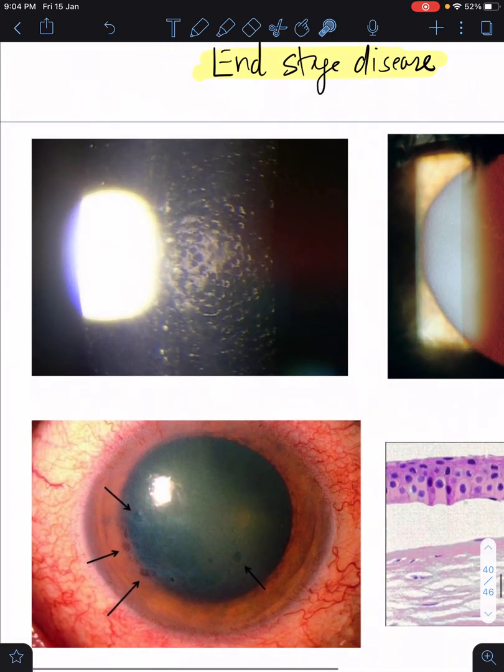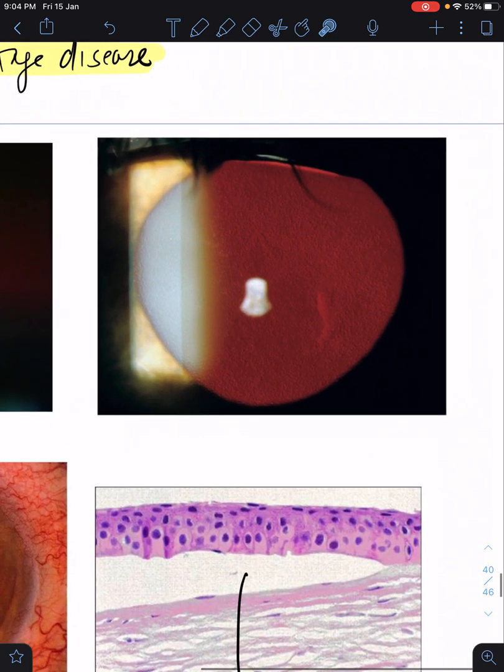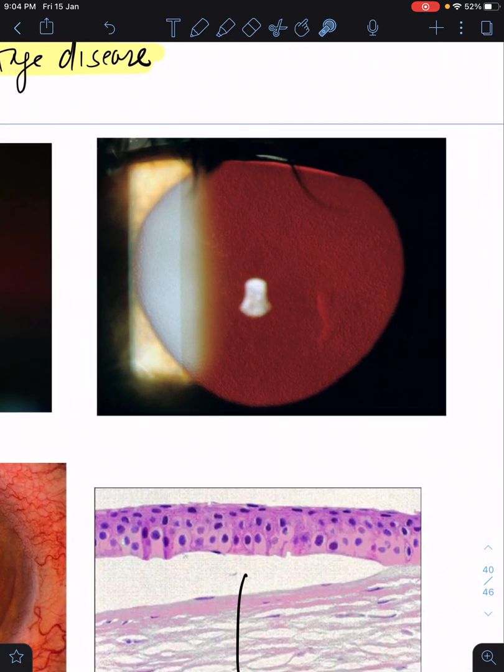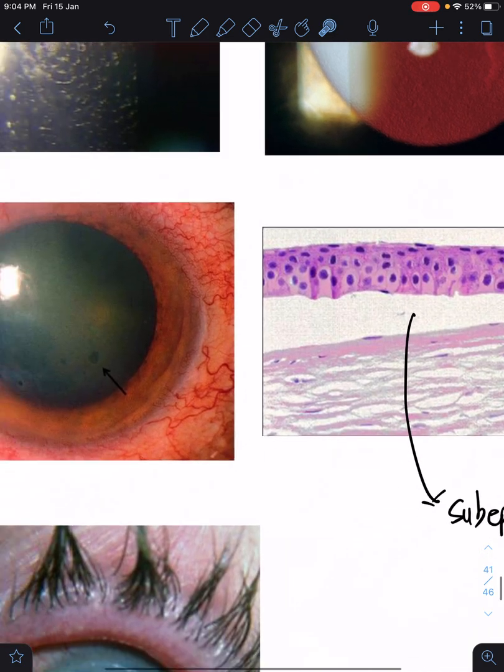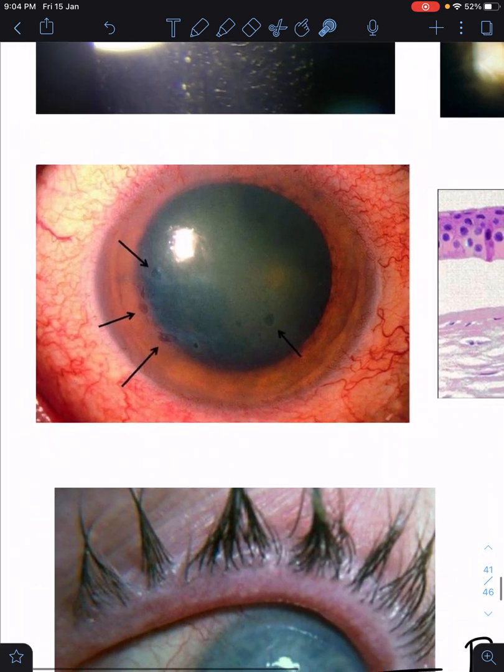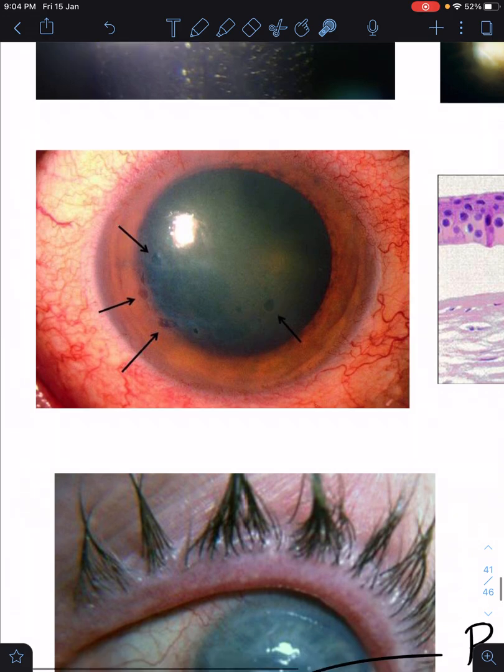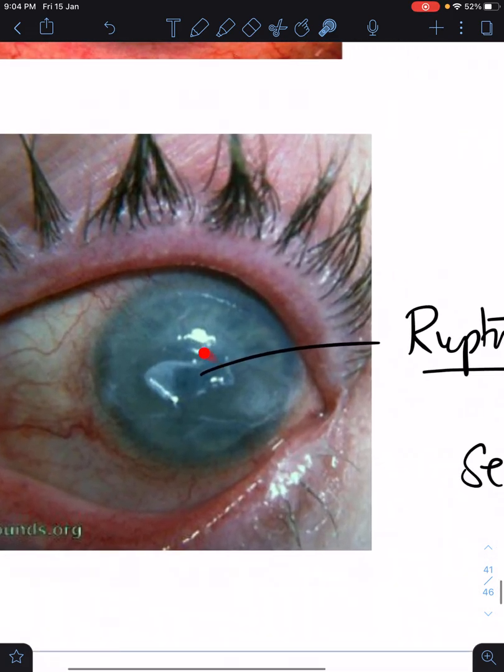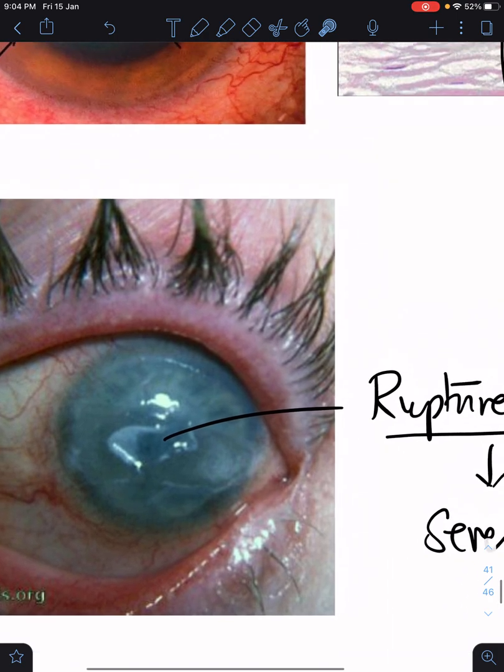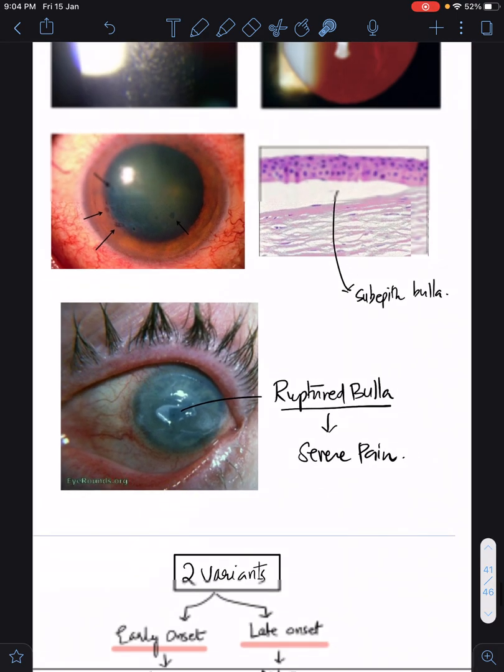This is a picture showing the typical copper beaten appearance on the cornea or the beaten metal appearance. You can always appreciate Fuchs guttae very well in retro-illumination, so please always look at the guttae on retro-illumination. This is the stage where you have epithelial bullae and microcystic epithelial edema noted. When this bulla ruptures it can cause severe pain. You can clearly see the ruptured bulla.